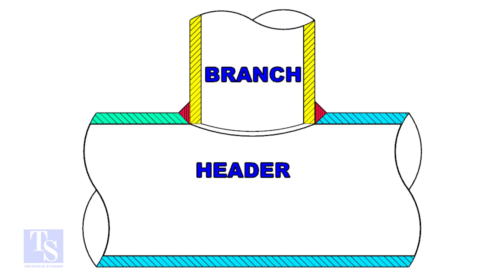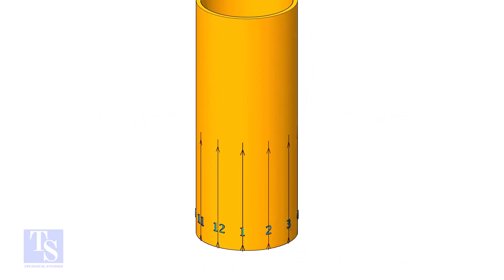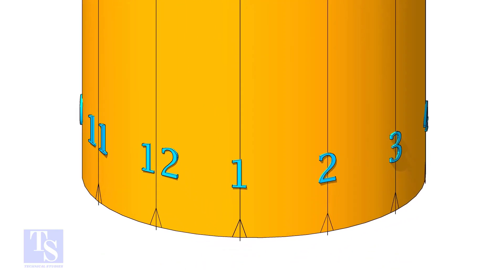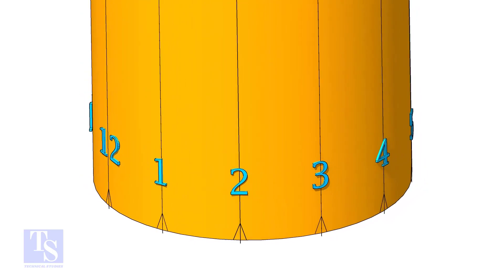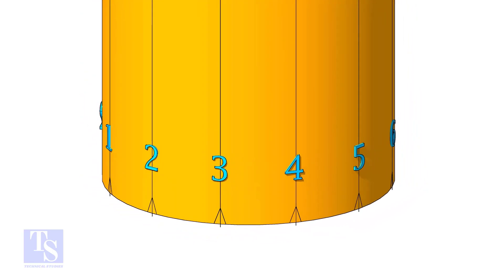In this method, the branch size shall be 2 to 3 inches less than the header size. Divide the branch pipe into equal parts. In this case, I divide the pipe into 12 parts.